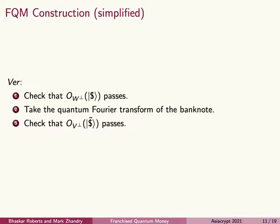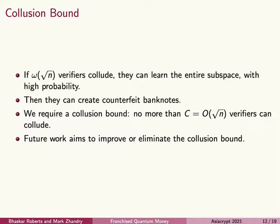Verification works similarly to before. Notice that A is contained in W-perp and A-perp is contained in V-perp. So the oracles used in franchised verification are like looser versions of the oracles from public-key verification. We don't need to obfuscate the franchised oracles because every verifier gets a different V and W. The reason why franchised verification avoids the need for obfuscation is that we're not trying to prevent an adversary from fooling any person — instead, we're trying to prevent them from fooling any person other than themselves.